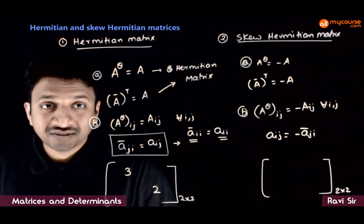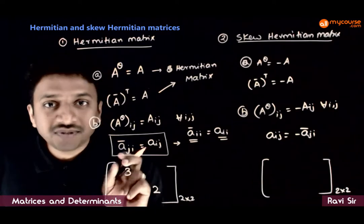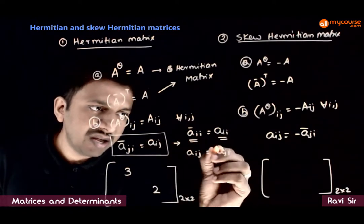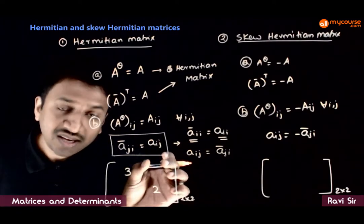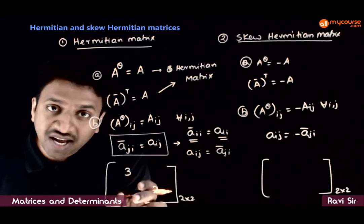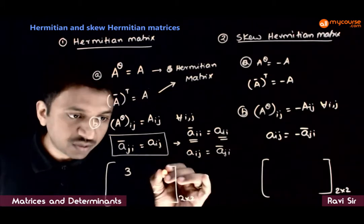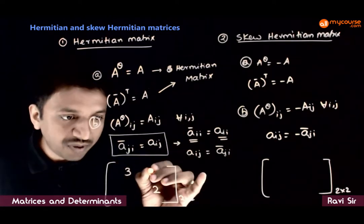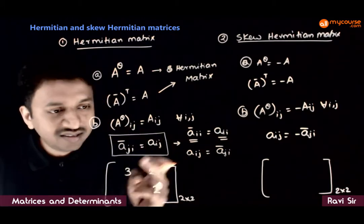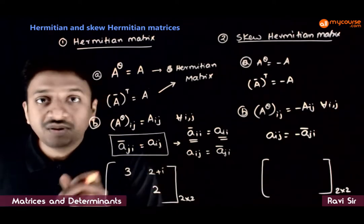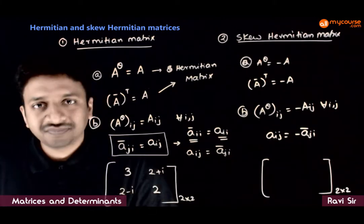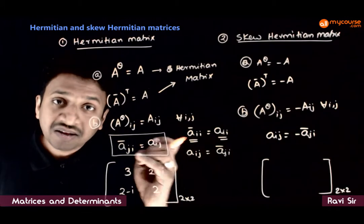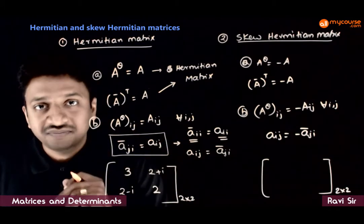For the non-diagonal elements, where i is not equal to j: A_ij equals the conjugate of A_ji. So A_ij and A_ji are mirror images about the diagonal. For example, this is the (1,2) element and this is the (2,1) element. So A_12 has to be the conjugate of A_21. If you have the element 2+i as the (1,2) element, the (2,1) element must be its conjugate: 2−i. So the diagonal elements must be purely real and the non-diagonal elements must be conjugate mirror images of each other.